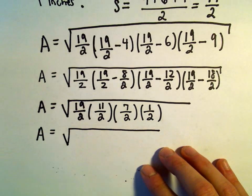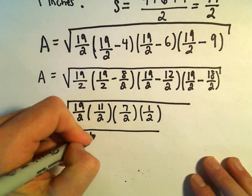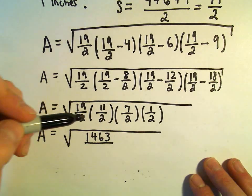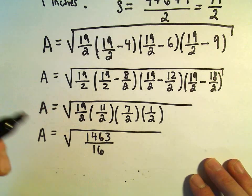So let's see, we can do 19 times 11 times 7 times 1. I'm getting 1,463 over, in the denominator, you'd have 2 times 2, which is 4 times 2, which is 8 times 2, which is 16.